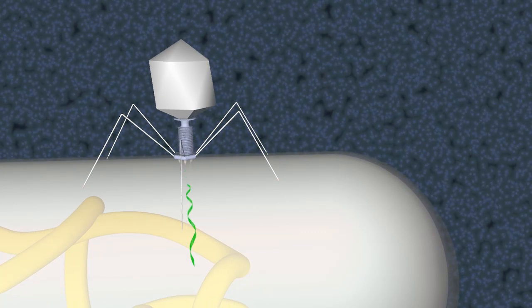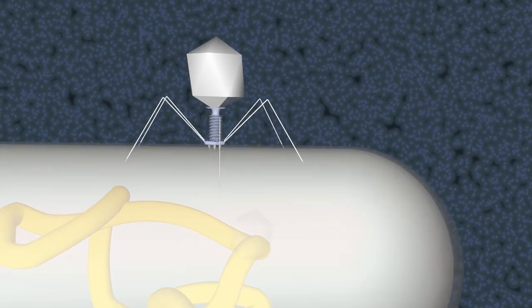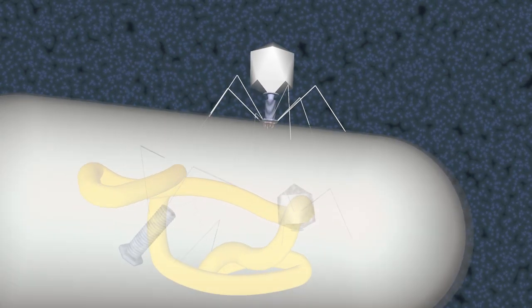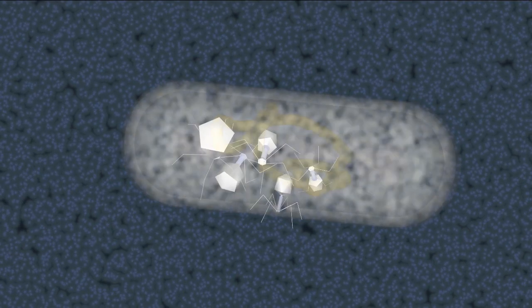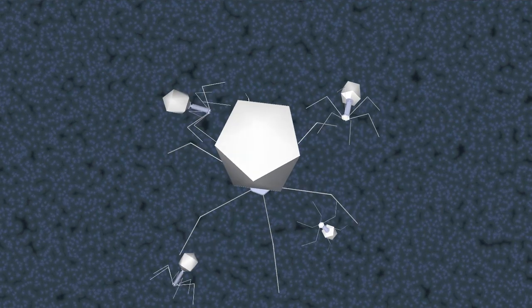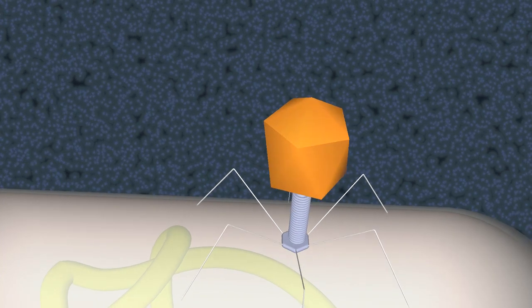Such viruses hijack bacteria, using bacterial cell components to generate new phage particles. In some cases, a phage's reproduction cycle kills the host bacterium. In other cases, the bacterium survives.